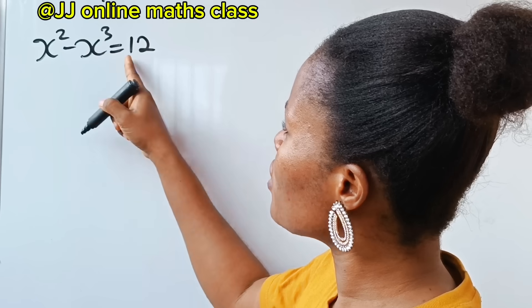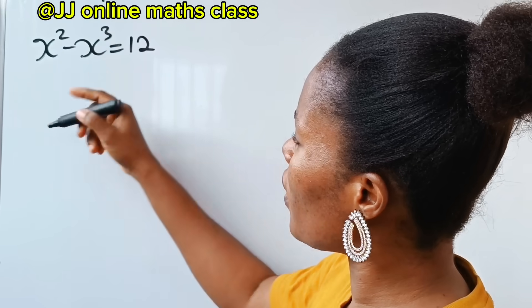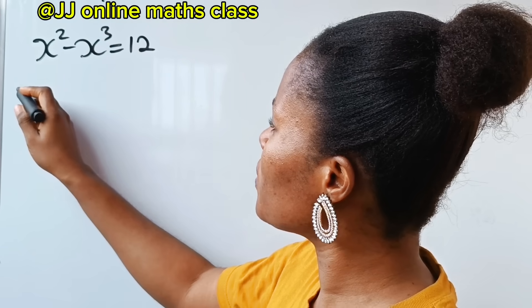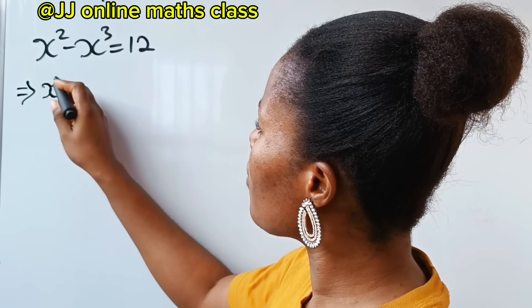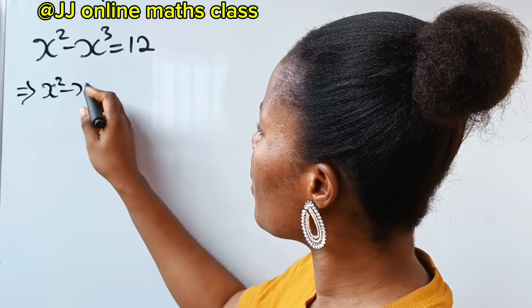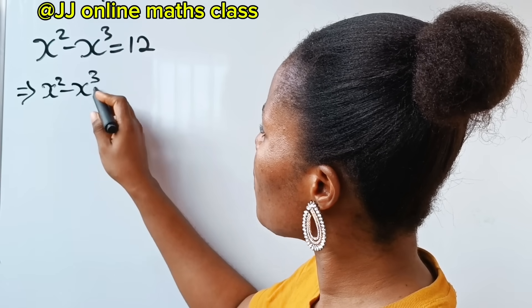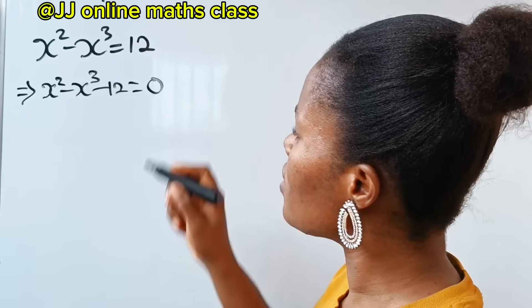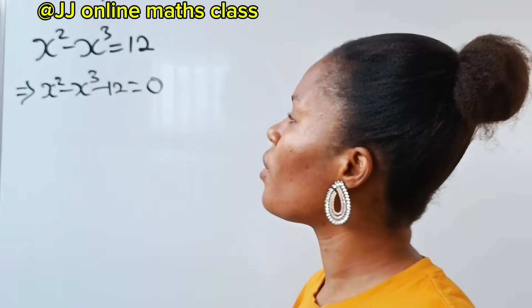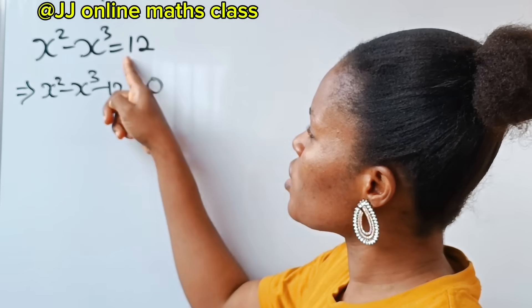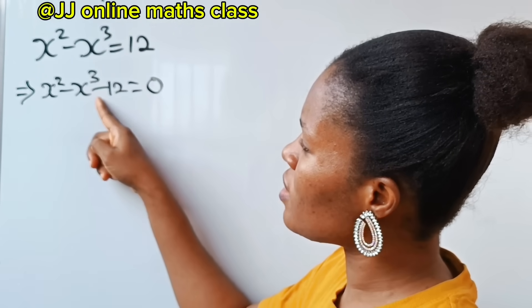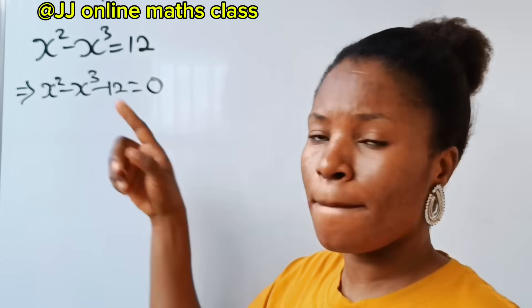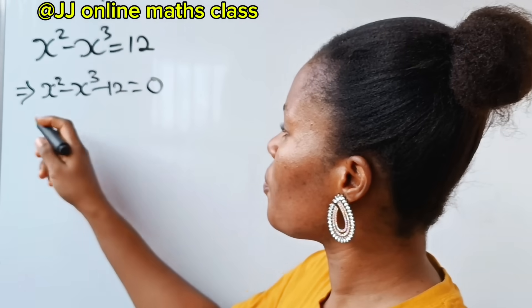We are going to bring this 12 in, and if we do that, we are going to have x squared minus x to the power of 3 minus 12 is equal to 0. Since the plus 12 crosses over, it becomes minus 12.